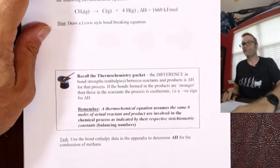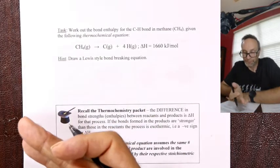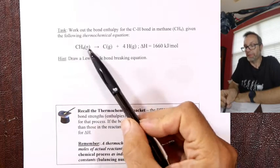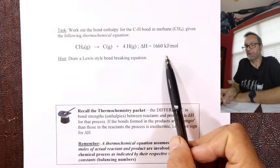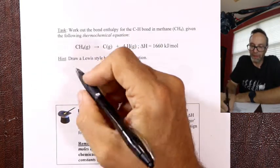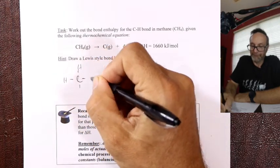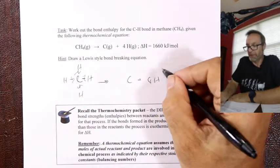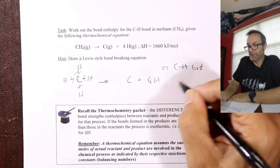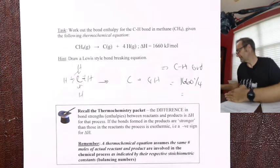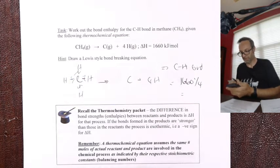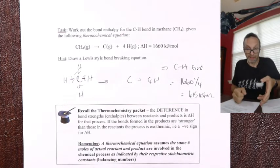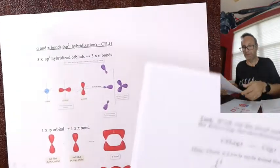We can work out the bond enthalpy of a C-H bond given a thermochemical equation. If I take CH₄ and break it into all its atoms, I basically broke one, two, three, four bonds. So therefore the C-H bond - because there are four of them - is 1660 divided by four, which equals 415 kilojoules per mole. Looking at the table of bond enthalpies, a carbon-hydrogen bond is listed as 414 - average numbers.